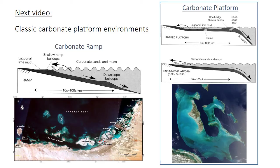That pretty much concludes the characteristic features of carbonate ramp facies. The next video will discuss carbonate platforms, which are the classic and best studied of the carbonate environments. Many of the facies and structures discussed today are also found in carbonate platforms, but the distribution of energy differs significantly, and so the distribution of facies is also very different.